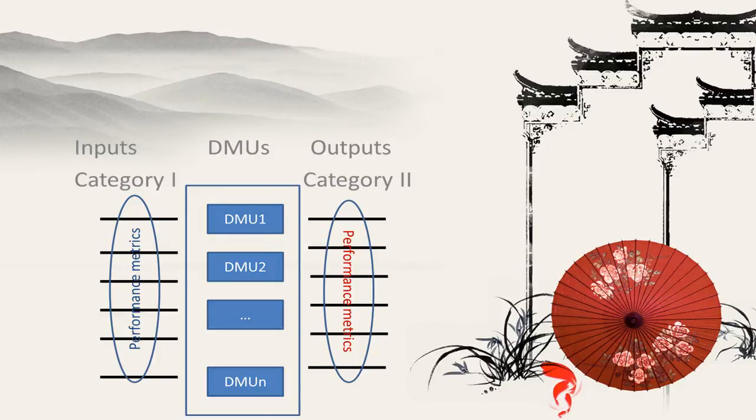However, in general, DEA is a benchmarking tool. The inputs are not necessarily the inputs to a system, and the outputs are not necessarily the outputs from a production process. These are just the naming conventions for different categories of performance measures, so you have to keep that in mind.